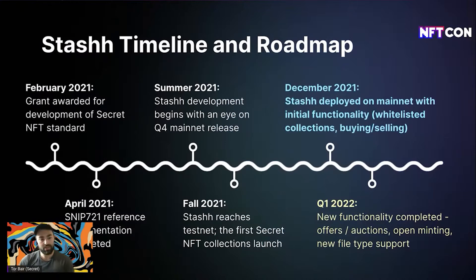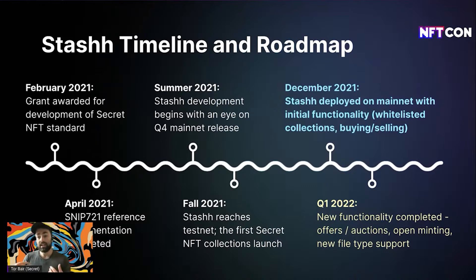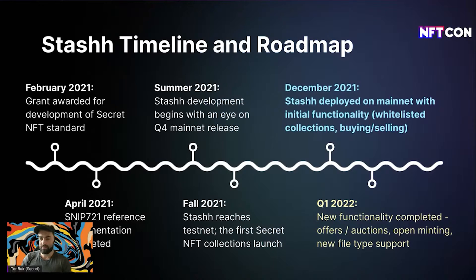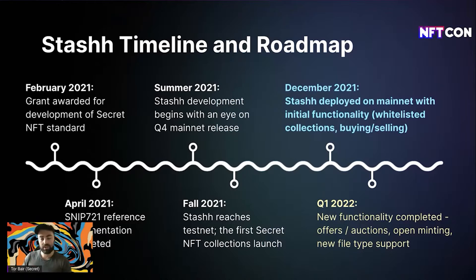Secret contracts launched on mainnet in September 2020. In February 2021 the first secret NFT standard grant was awarded, and the reference implementation was finished in April. Summer 2021 Stash development began, and in fall we reached testnet. December brought mainnet with the ability to import whitelisted collections, buy, sell, and all core marketplace functionality. In Q1 we added features like making offers, running private auctions, permissionless minting, and support for new file types including video, 3D renderings, and animations.